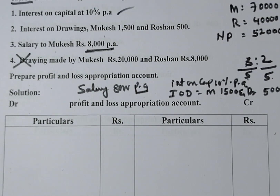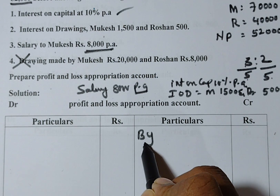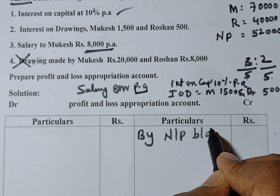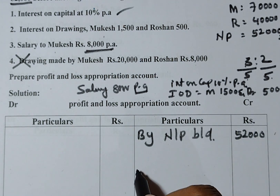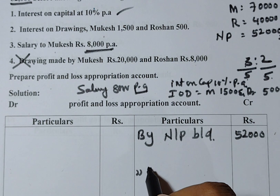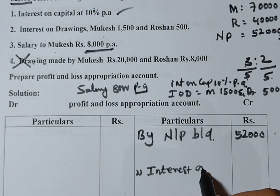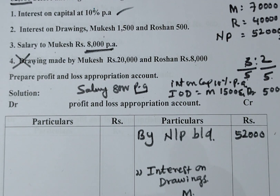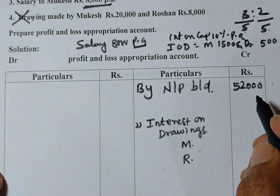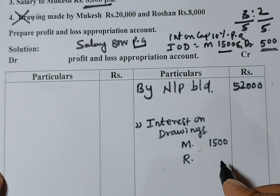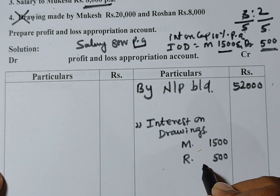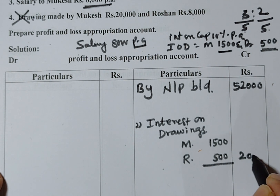The first entry on the credit side is 'By Net Profit Brought Down,' which is rupees 52,000 as given in the problem. The second entry is 'By Interest on Drawings' — Mukesh's interest on drawings is rupees 1,500 and Roshan's is rupees 500, totalling rupees 2,000. The credit side entries are now complete.